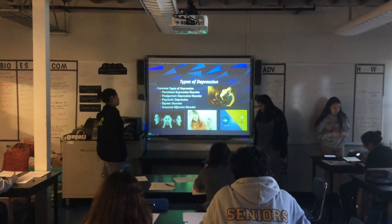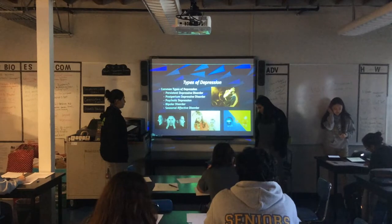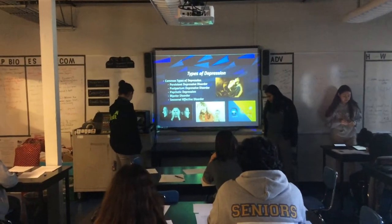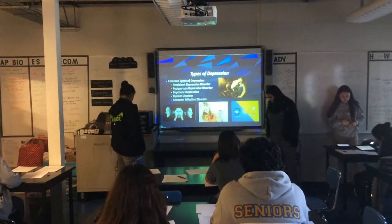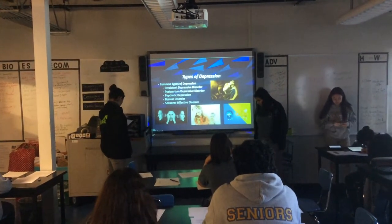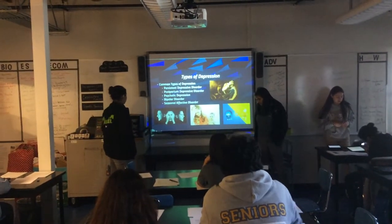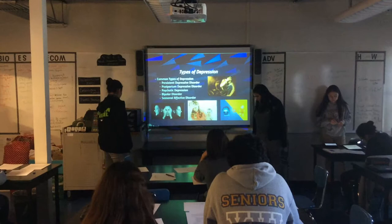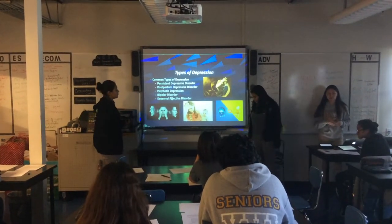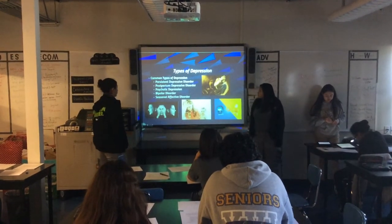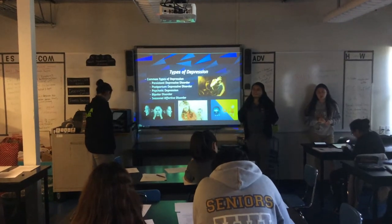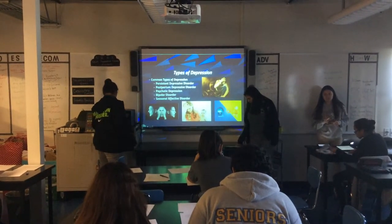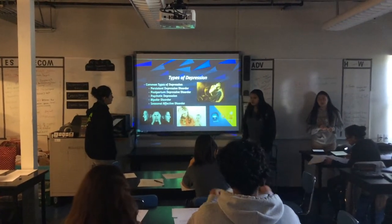Some typical types of depression include persistent depressive disorder, a chronic disorder in which a person's mood is typically very low, lasting approximately two years. Postpartum depressive disorder is depression suffered by a mother after childbirth, due to hormonal change and the psychological adjustment of being a mother. Psychotic depression is caused by psychosis, which includes hearing voices or having hallucinations. Bipolar disorder is depression associated with mood swings that include being extremely happy or extremely angry. And seasonal affective disorder is depression related to changes in season, usually late autumn and winter when there's a lack of sunlight.